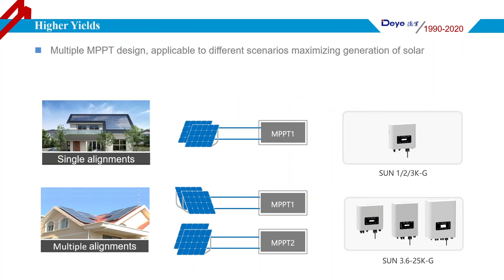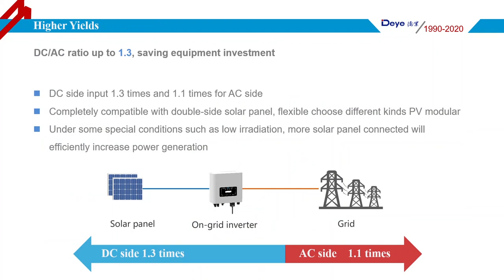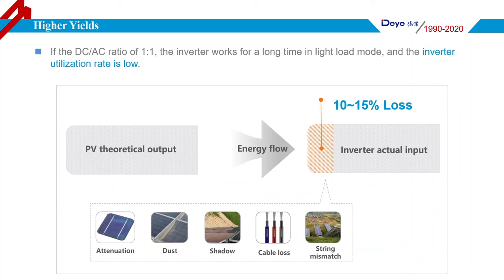The DC/AC ratio is up to 1.3 on the DC side and 1.1 times on the AC side, which helps save investment. With this feature, it is compatible with double-sided solar panels, so users can choose various kinds of PV modules. Under special conditions such as low irradiation, more solar panels connected will increase power generation. The maximum output power is 1.1 times the rated power — for example, for a 5K model, the maximum output power is 5.5 kW.